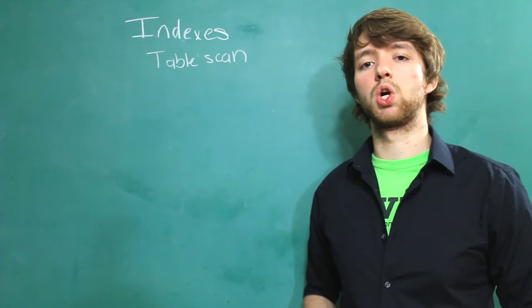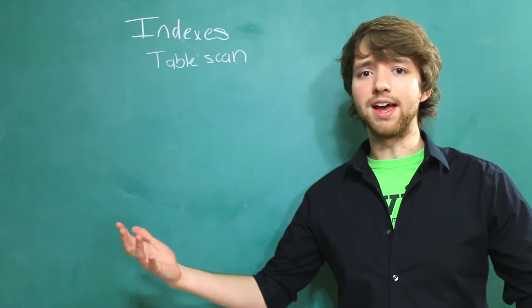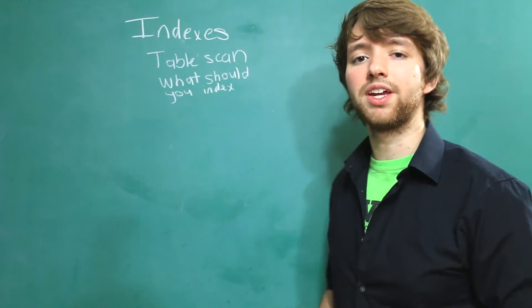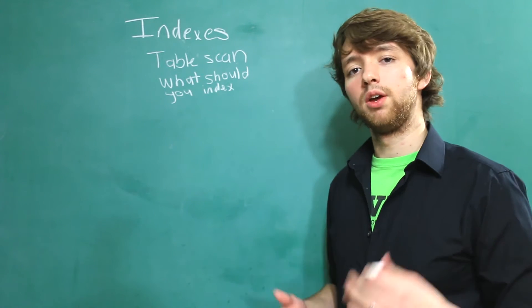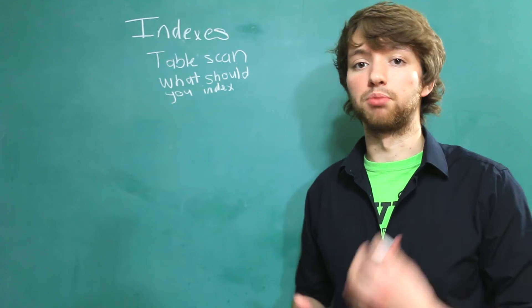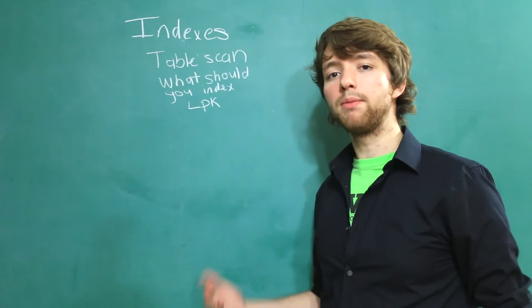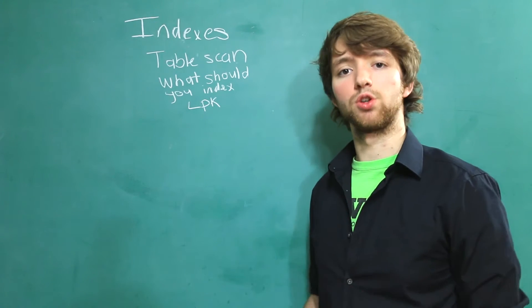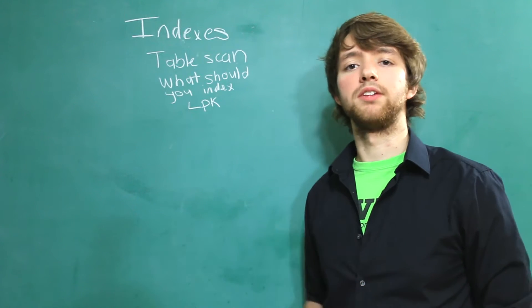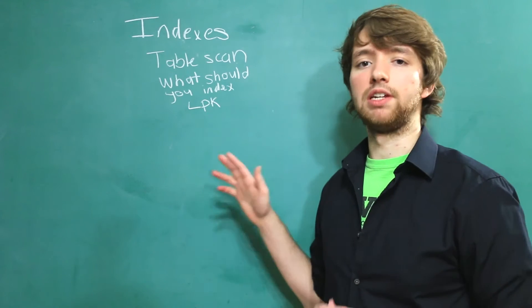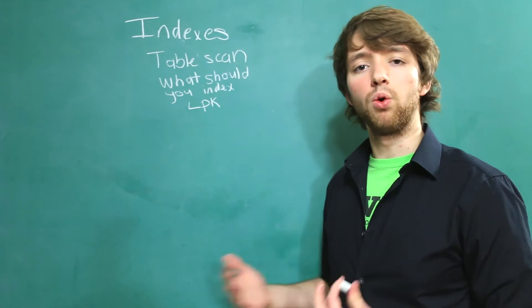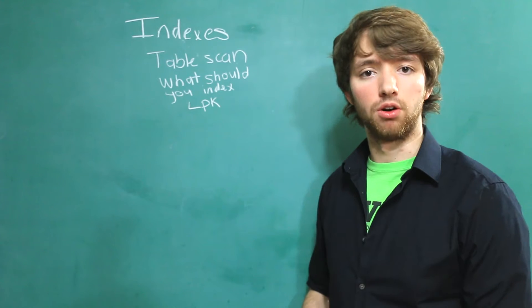Now we need to answer a question, what should you index? Well thankfully, Oracle Database is actually going to index some stuff automatically for us. One thing that it will do that for is the primary key. The primary key is something we're often going to search for, we're often going to join tables using the primary key, and so we always want to have an index on the primary key basically. Oracle's going to do that for us by default.